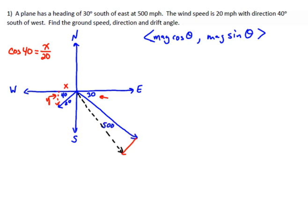For the wind vector, it's the magnitude of 20 times the cosine of the angle. But because it's in the third quadrant, it's got to be negative, because your x value is going to be negative at that point. Your y value is also going to be negative, and it's just 20 sine of 40. We're just going to use our calculator to actually calculate them.